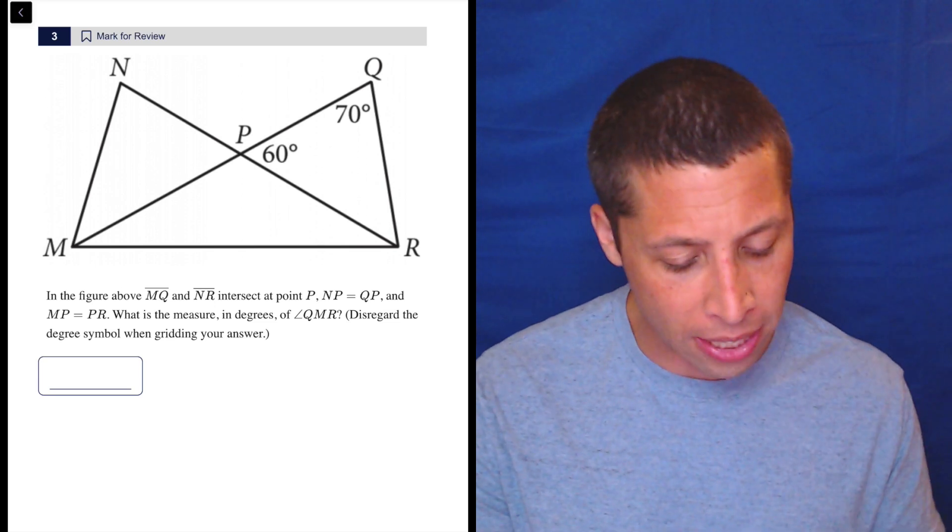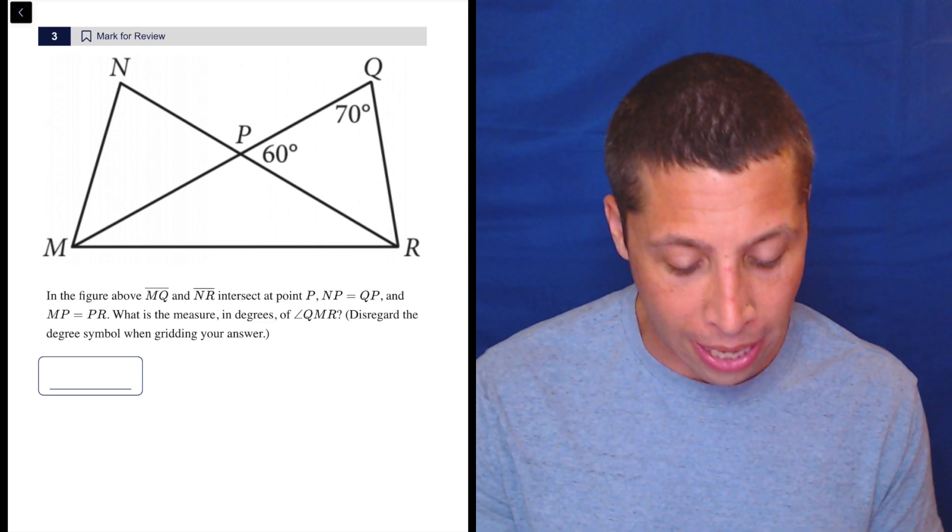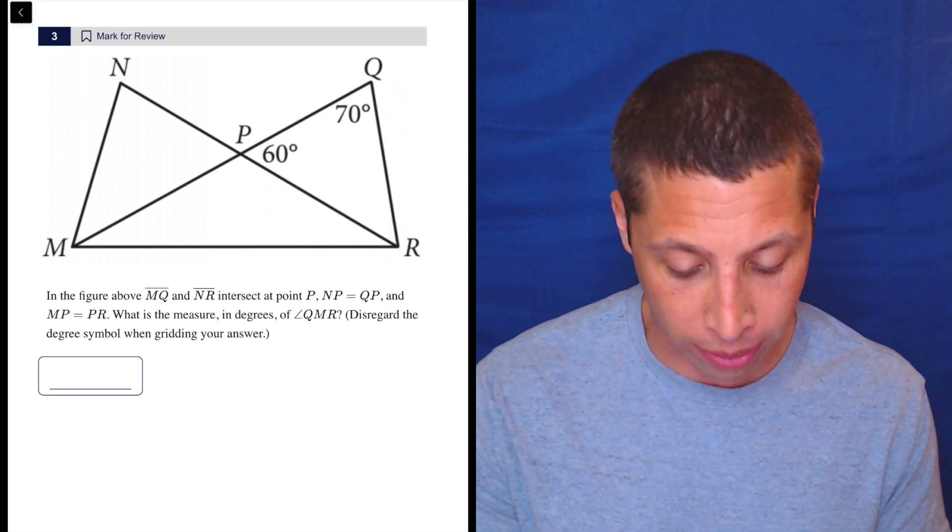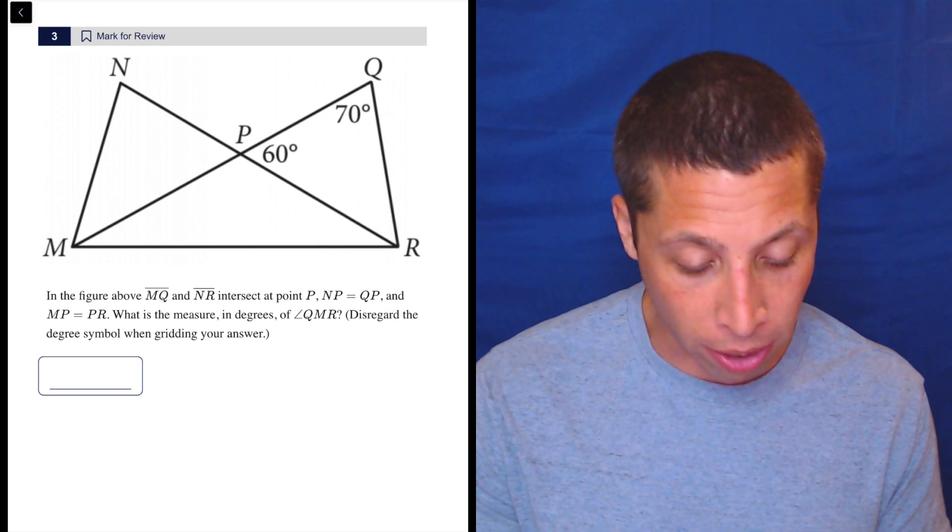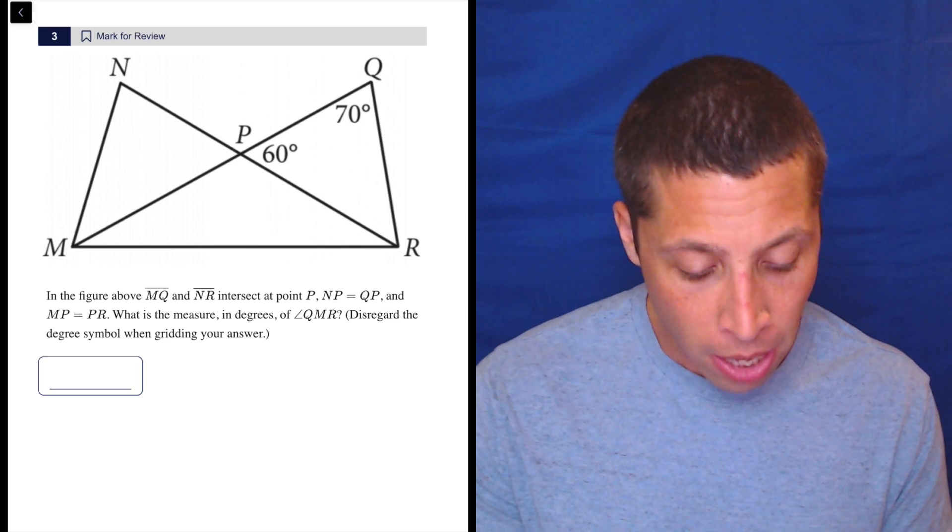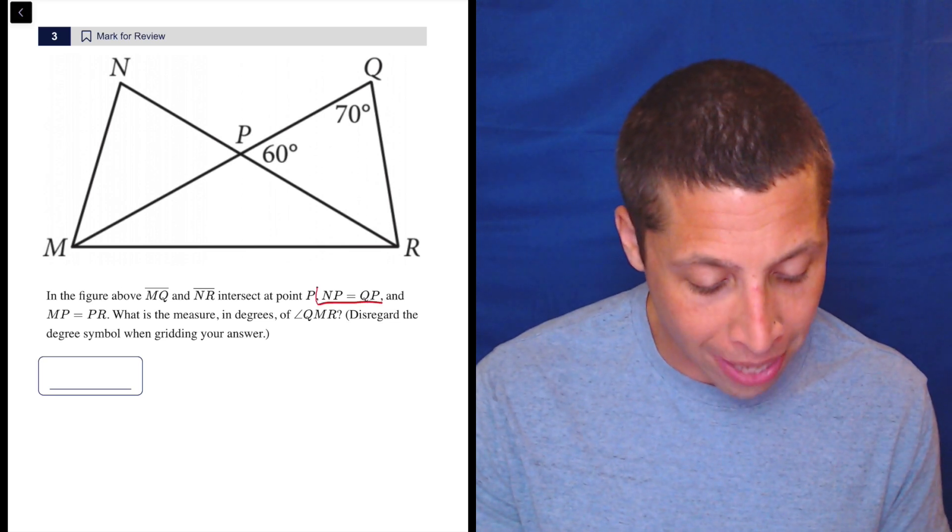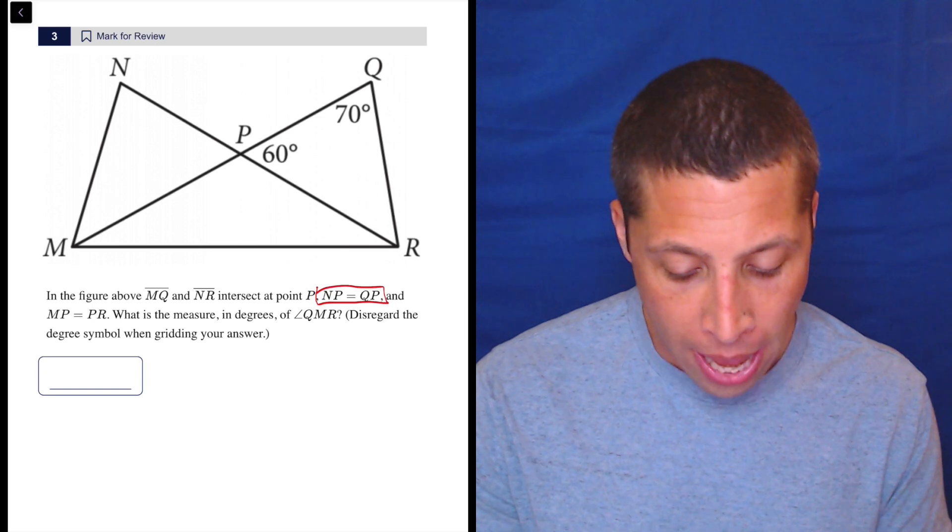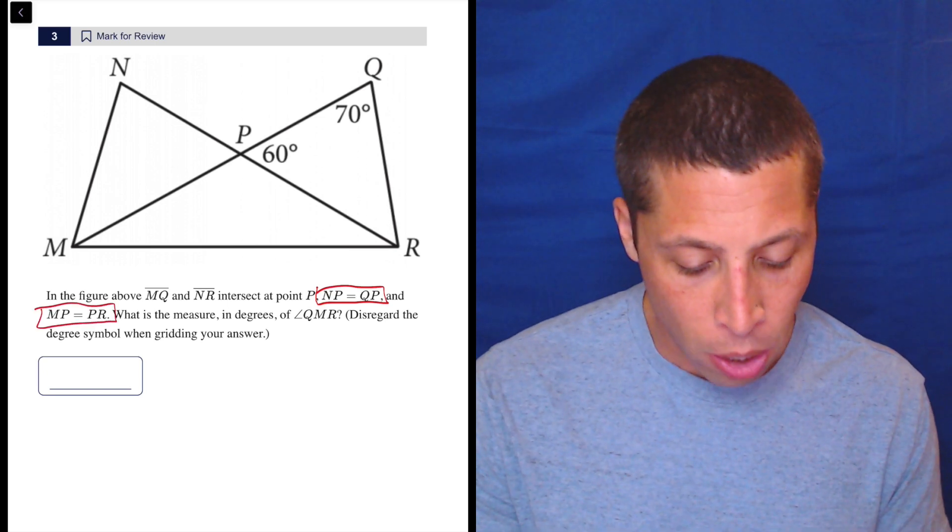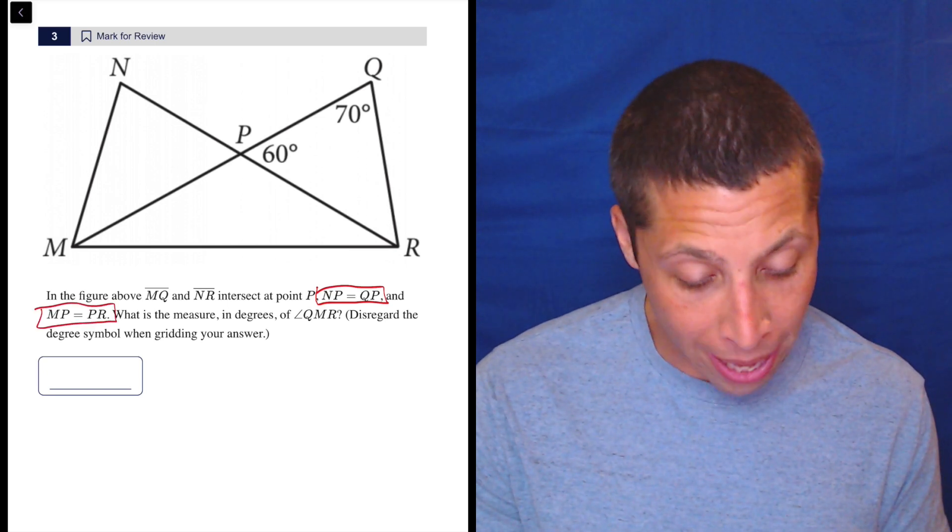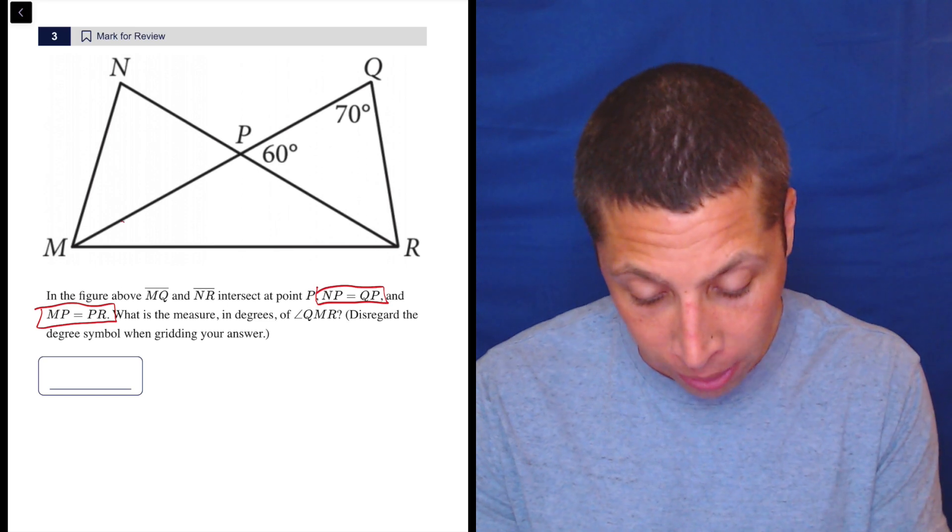So you got to be able to do this. It's maybe a little tedious, but it's something you got to be able to do pretty confidently and relatively quickly. So in the figure above, MQ and NR intersect at point P, and NP equals QP. So we'll come back to that. They didn't tell us that for no reason. And MP equals PR. What is the measure in degrees of angle QMR? So QMR is right there.